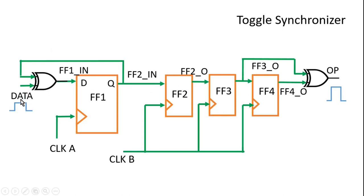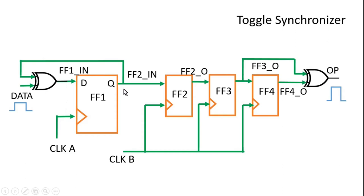Now assume a pulse comes on the data input. The other input of the XOR gate is zero, so the XOR output becomes 1. On the positive edge of clock A, this 1 is transferred to the output of flip-flop 1. Immediately, both inputs of the XOR gate become 1 and its output goes to 0. But by the time the next clock A edge arrives, the data pulse has ended, so data goes to 0 and other input is 1, making the XOR output 1 again. This 1 is transferred on the next positive edge of clock A, and the output of flip-flop 1 remains constantly at logic 1.